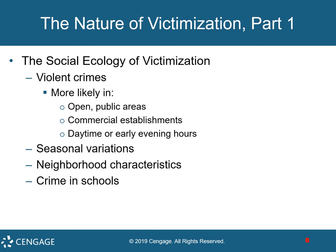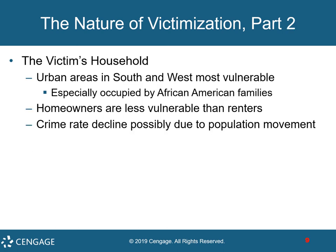As far as crime in schools, before and after school adult supervision is minimal. Schools bring together the most dangerous segment of the population — teenage males. The location of the victim's household can also play a role. Homes in urban areas in the south and west are most vulnerable. Homeowners are less vulnerable than renters. Smaller households in less populated areas have lower victimization rates. Some of that crime rate decline is possibly due to population movement.